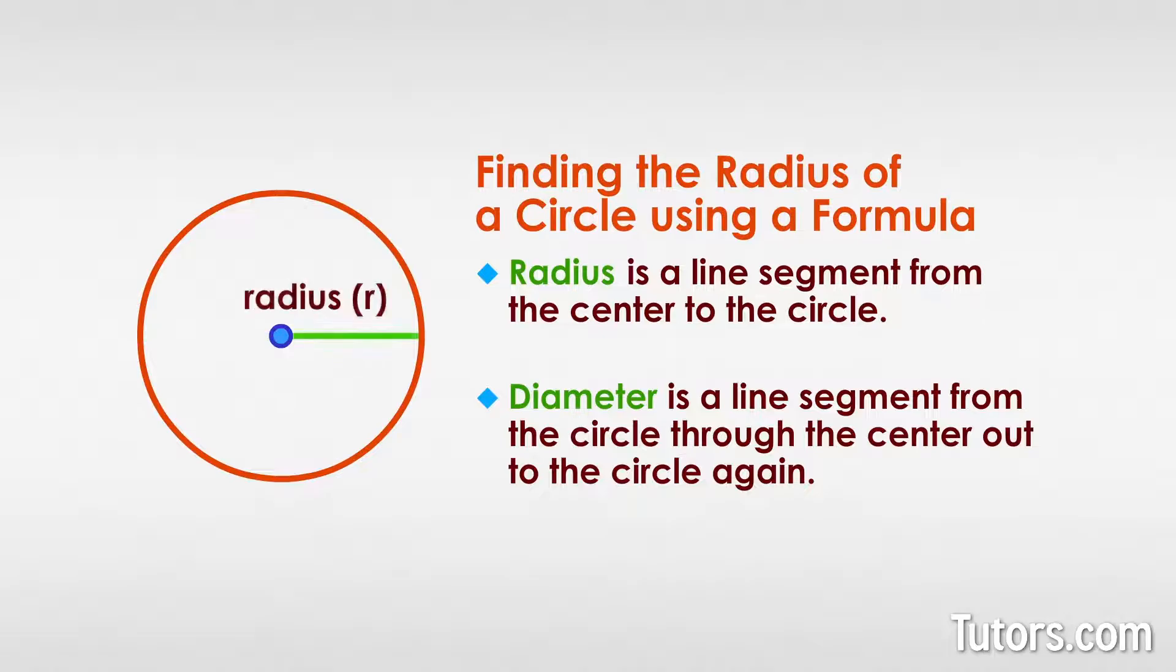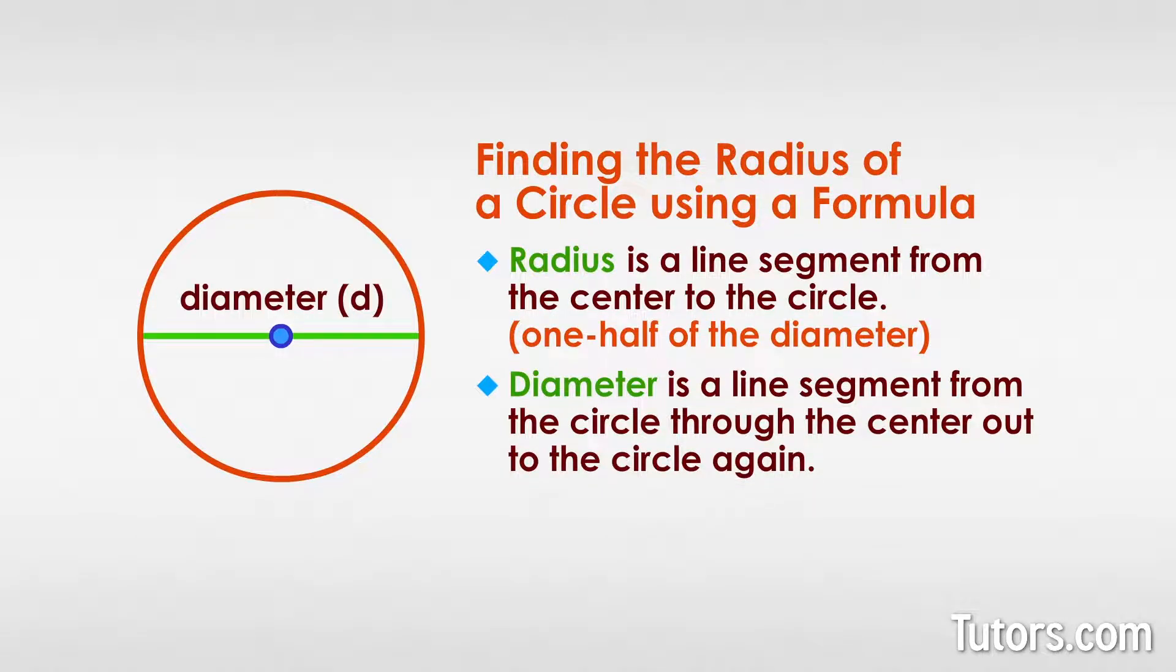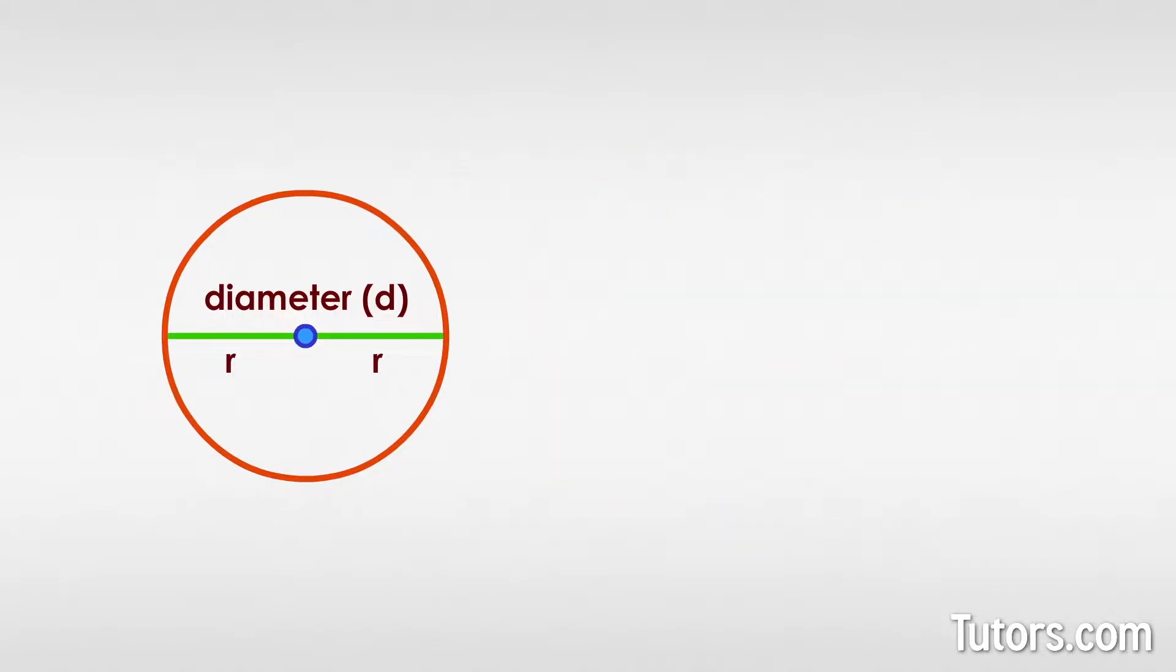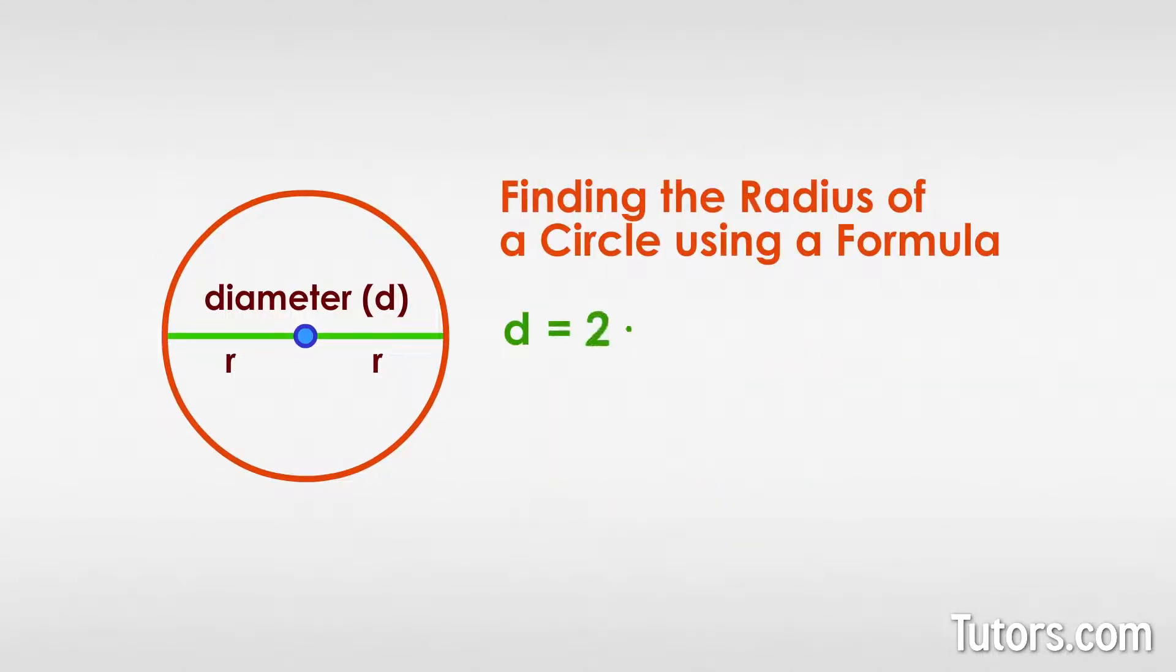it follows that a radius is one half of the diameter and a diameter is equivalent to 2 radii. That is, diameter equals 2 times r and radius equals diameter divided by 2.